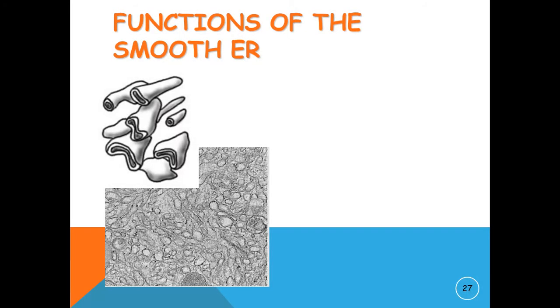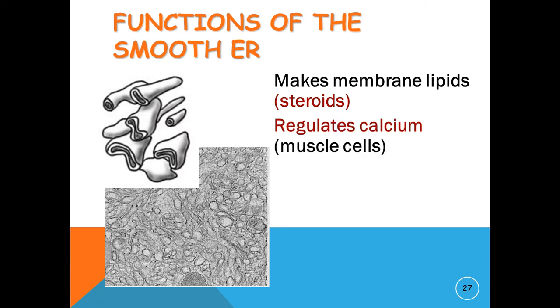Smooth endoplasmic reticulum is a mesh network of fine disc-like tubular membrane vesicles, part of a continuous membrane organelle in the cytoplasm of eukaryotic cells. It is involved in the synthesis and storage of lipids, including cholesterol and phospholipids, which are used in the production of new cellular membranes.